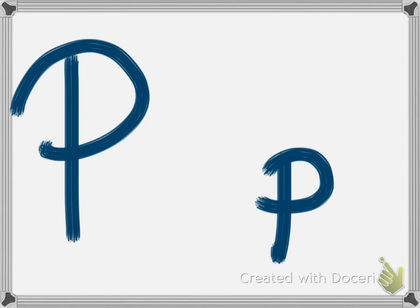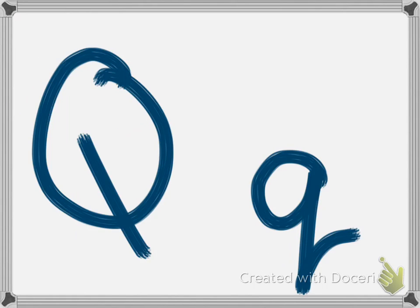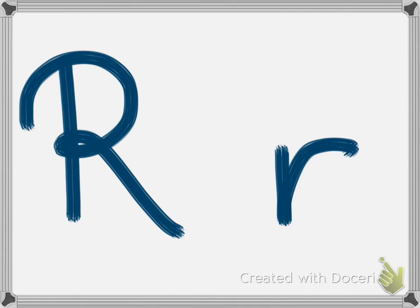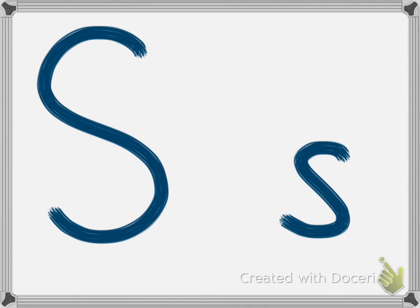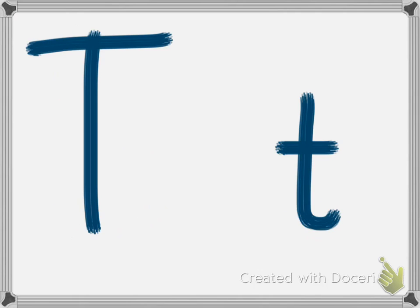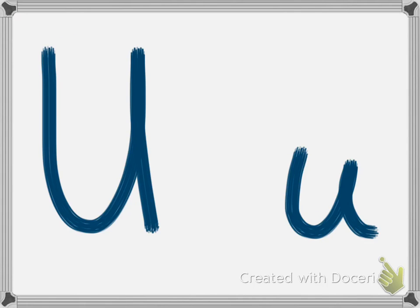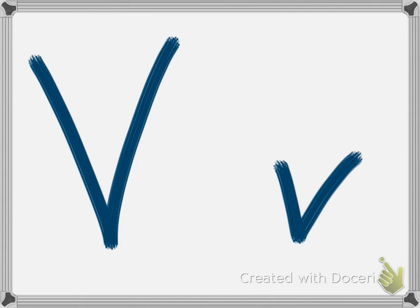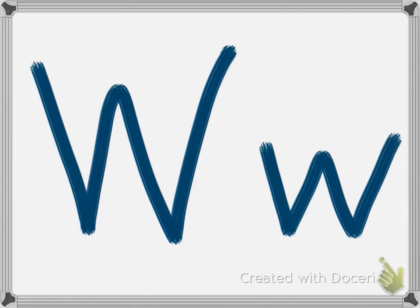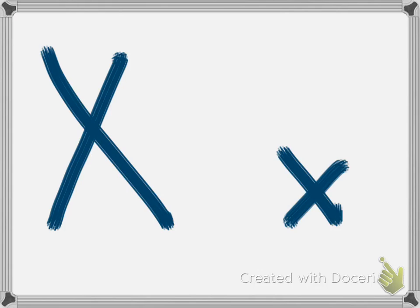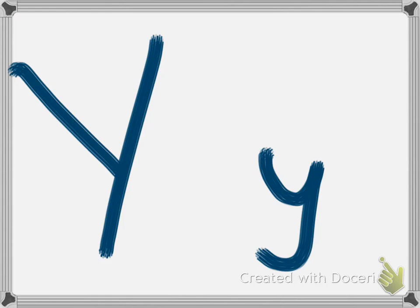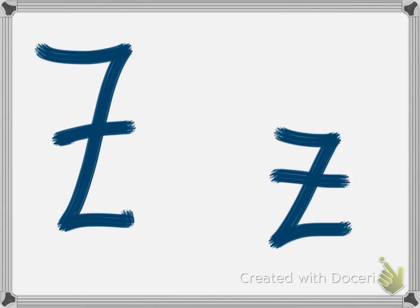P, P, Q, Q, R, R, S, S, T, T, U, U, V, V — 'doble V,' doble V — X, X, Y, Y, Z, Z.